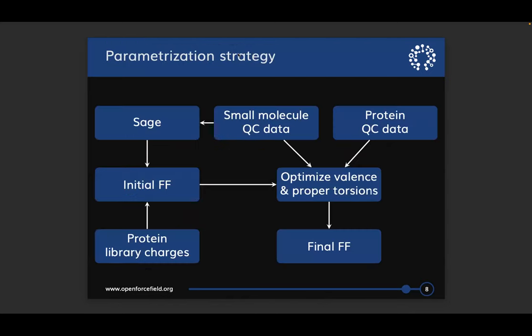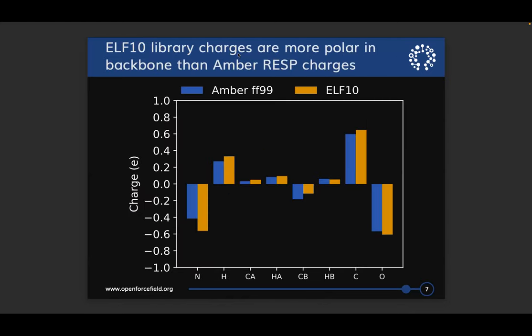To derive library charges for the proteins, we've used the AM1BCC-ELF10 method in OpenEye to parameterize charges for capped 5-mers, and then get the charges for an amino acid by averaging over all flanking residues for the residue in the middle. The charges for an alanine main chain residue show that the backbone atoms involved in hydrogen bonds are more polar and have higher magnitude charges compared to AMBER RESP charges. We expect this means these charges will interact more strongly with other charged species, giving stronger hydrogen bonds both within the protein and to solvent molecules.